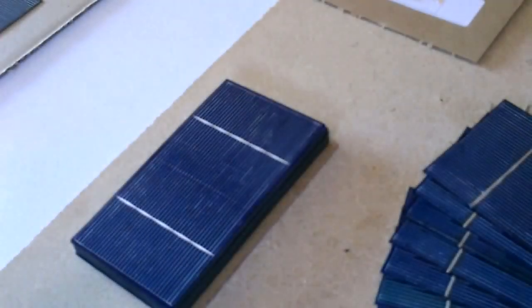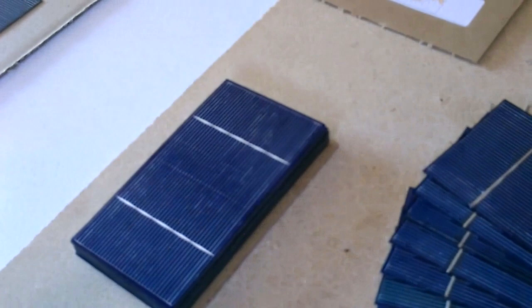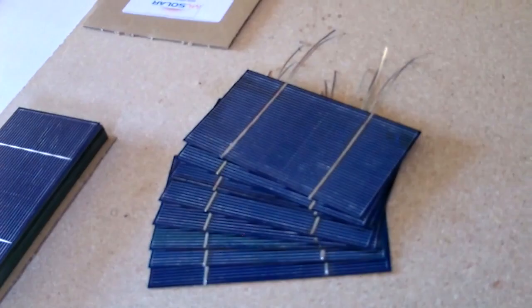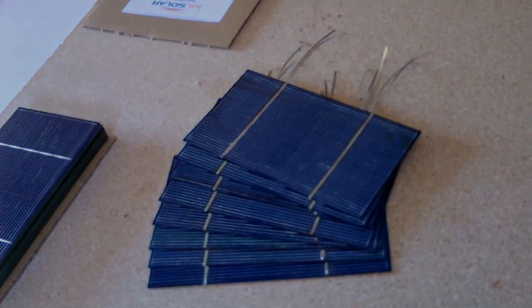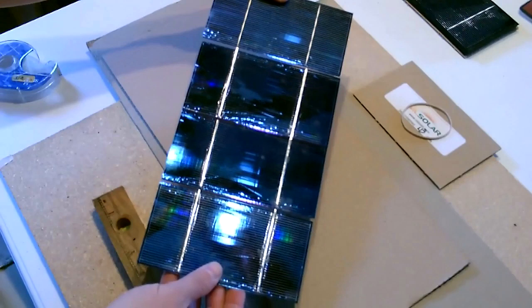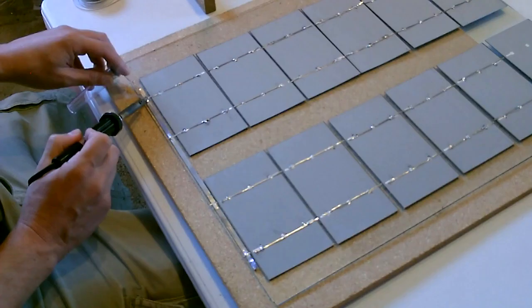So just to recap, in the first video I showed you how to take untabbed solar cells and tab them. Then in the second video I showed you how to put those cells into long strings, add the bus wire, and get it all set up for the case. Now I'm going to show you how to build the case.